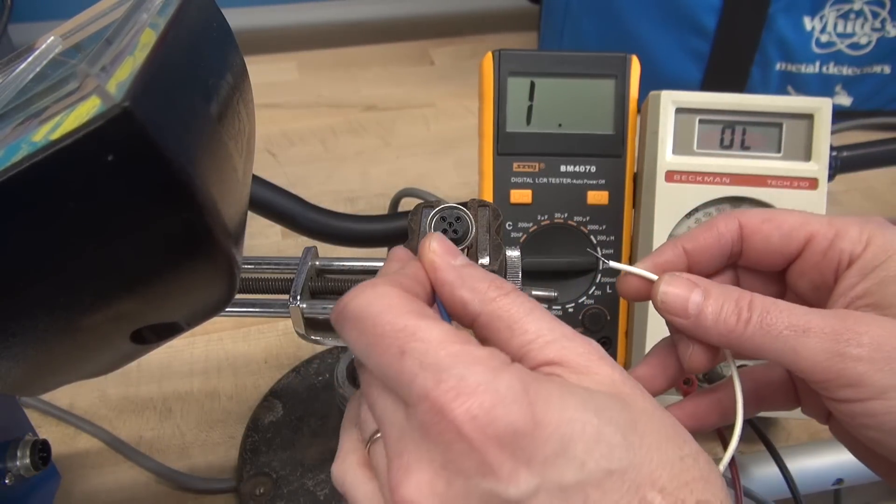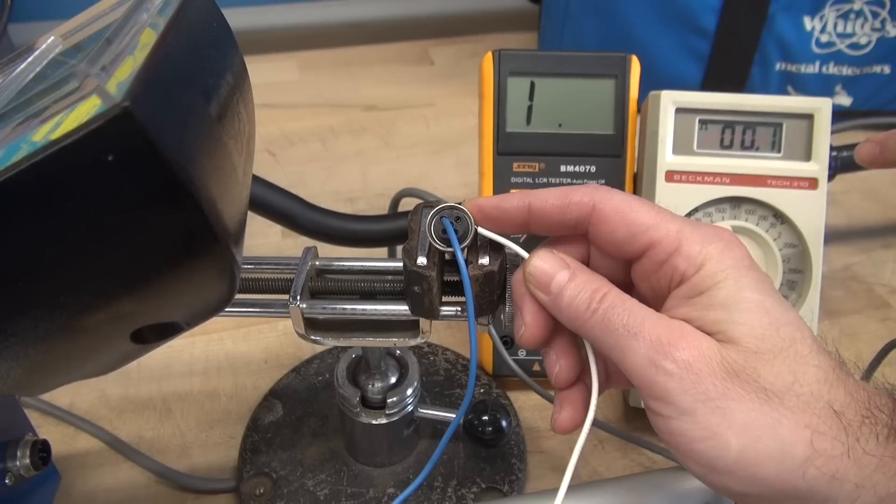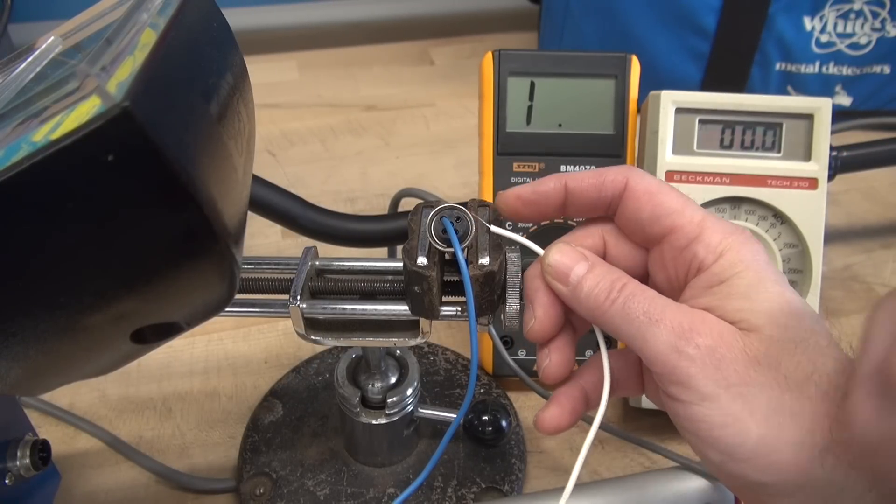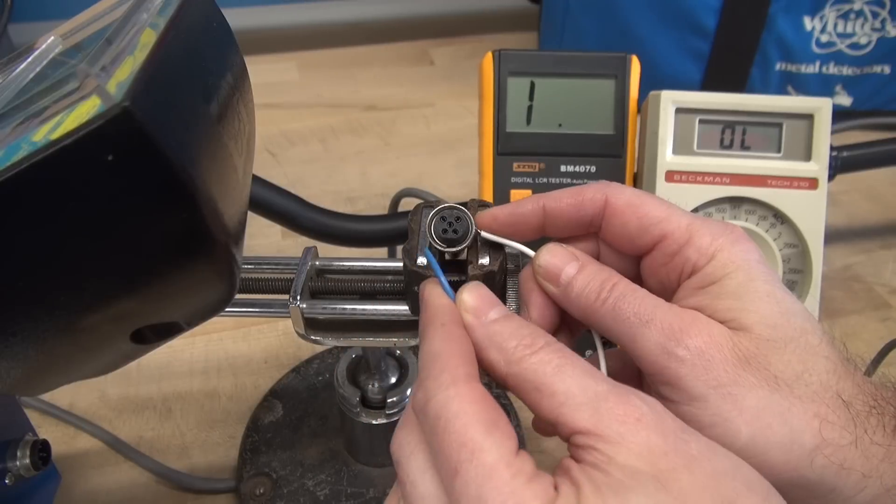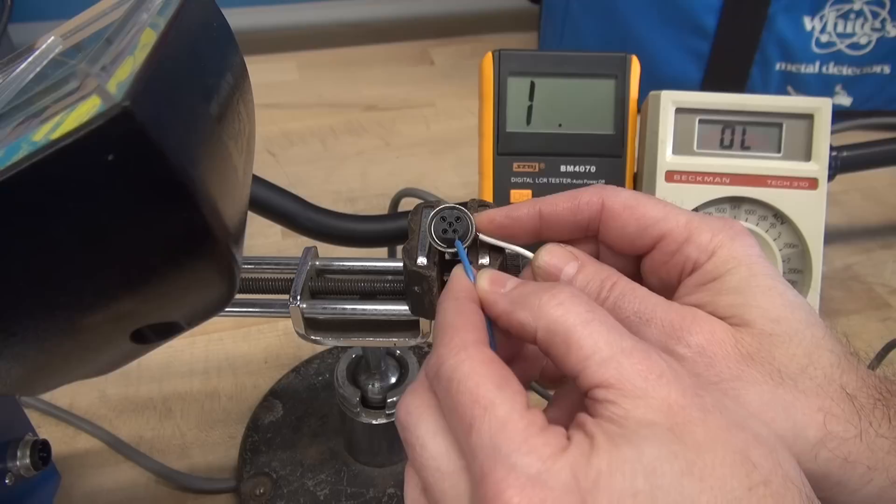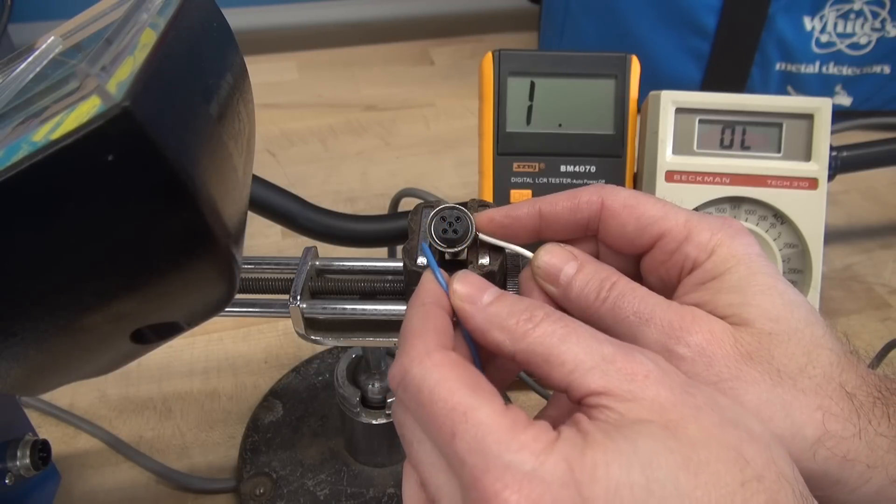So if you went from pin three to the case, you would see continuity on your meter. So that tells you that the shield is good. That shield should not be going to any of the other pins. So you can go through here and just kind of touch it and make sure that none of those wires are shorted to the shield.